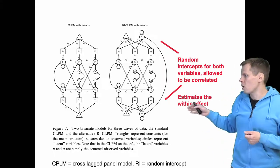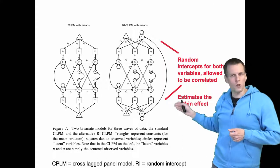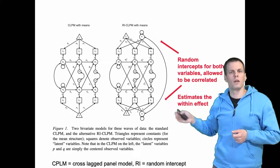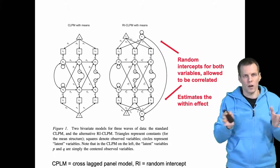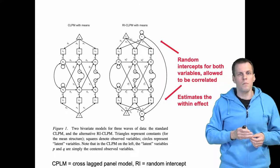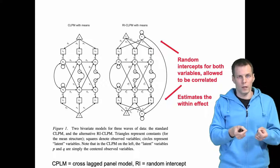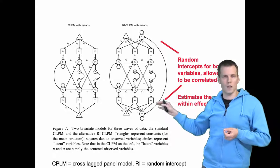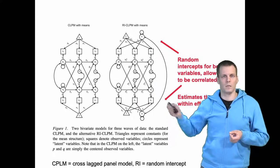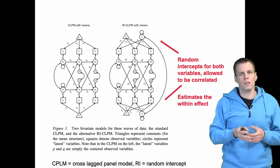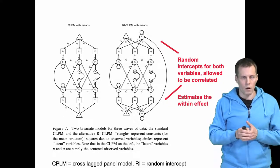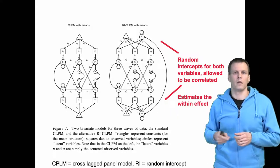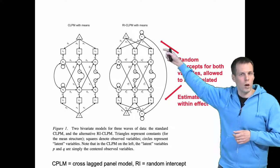When we control for these unobserved differences that are on the individual level instead of on the observation level, it allows us to parcel out the differences between individuals and only focus on the within effect. This model technically cluster mean centers the data and then we estimate the panel model. In practice, we can model the within effect by using this kind of model configuration.